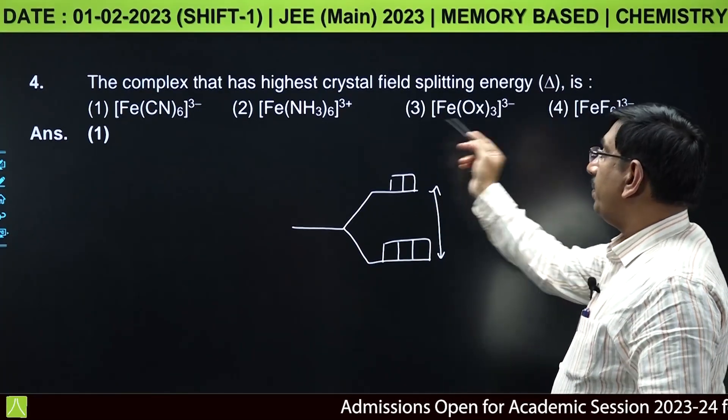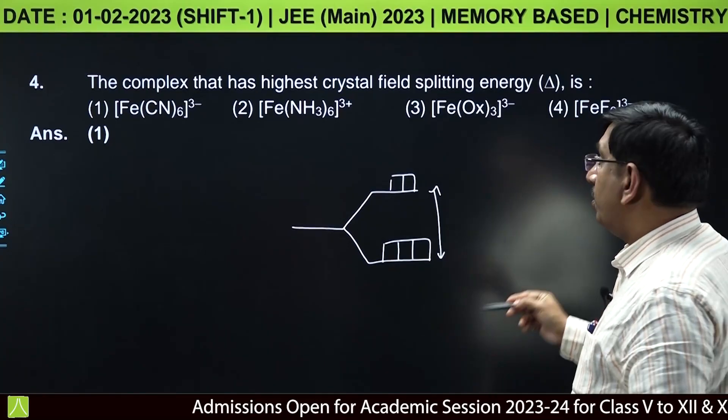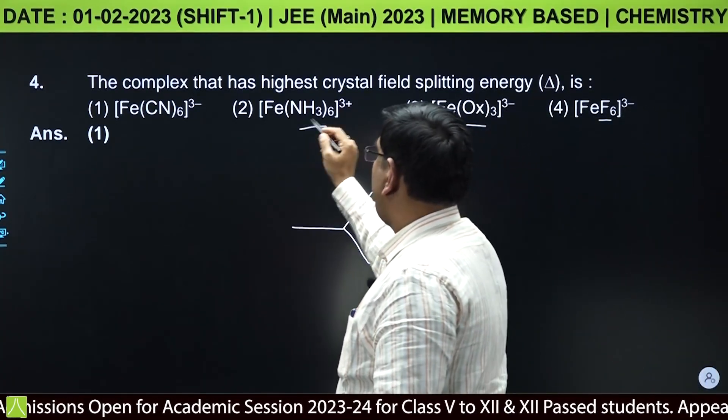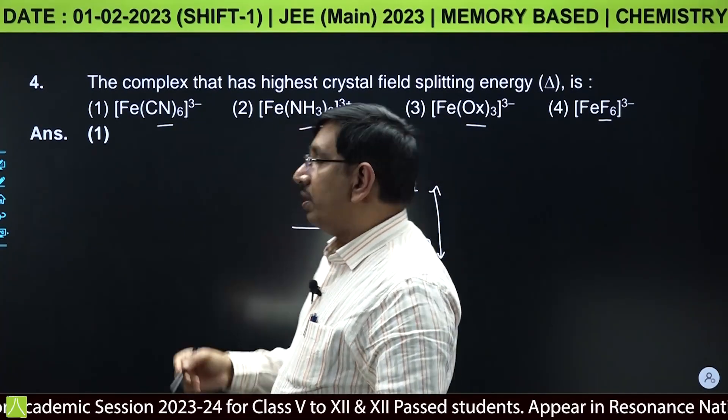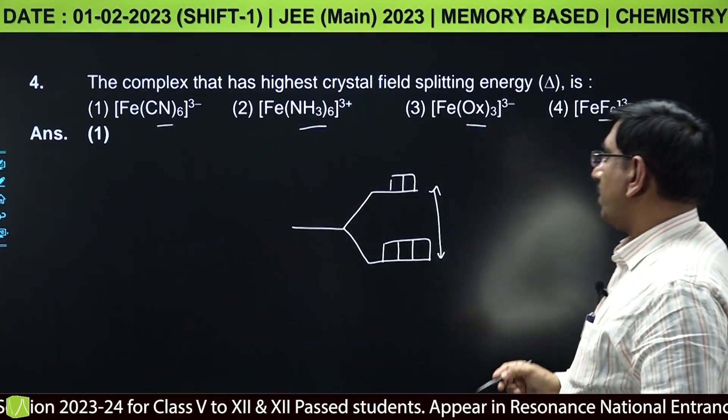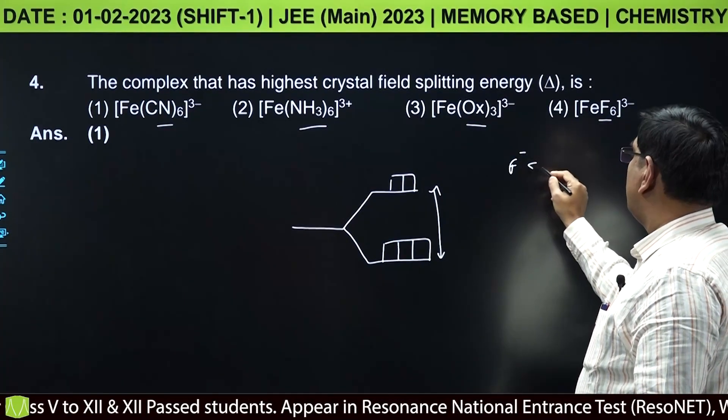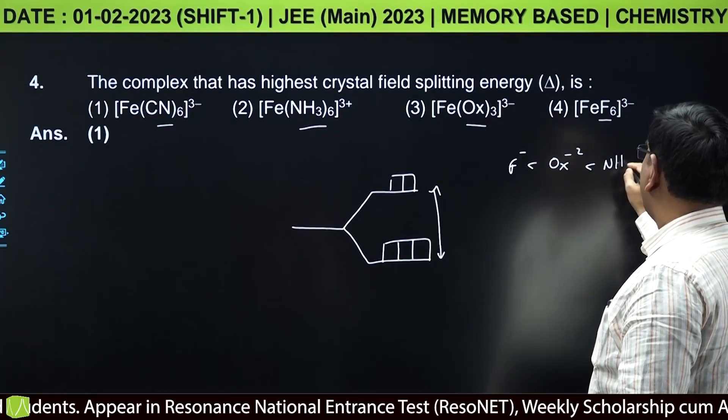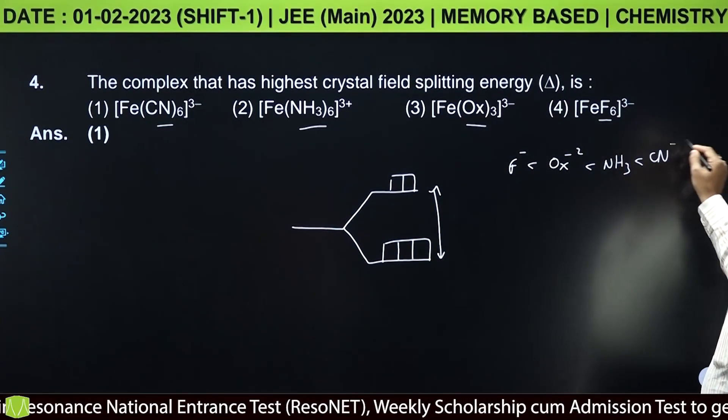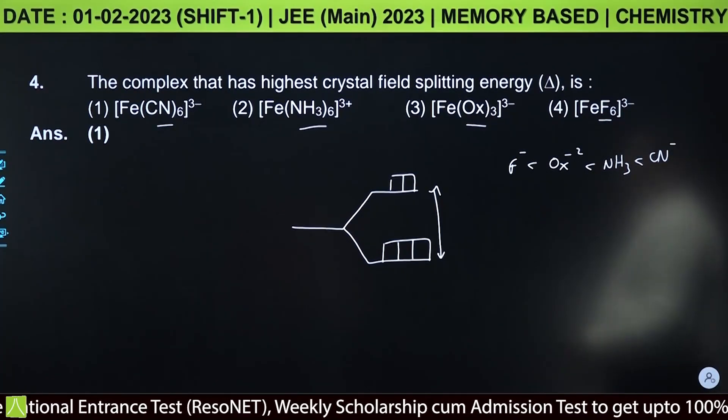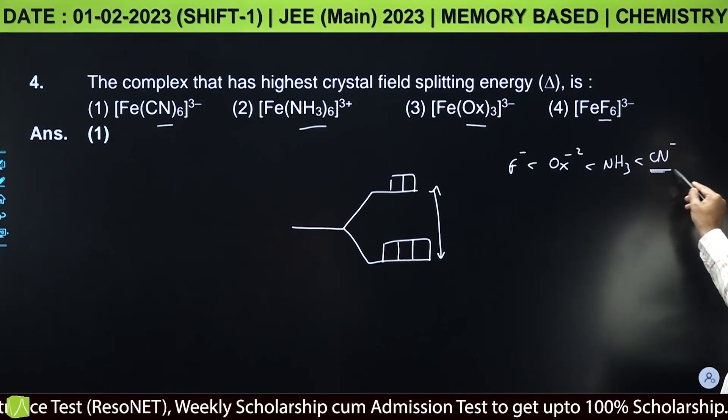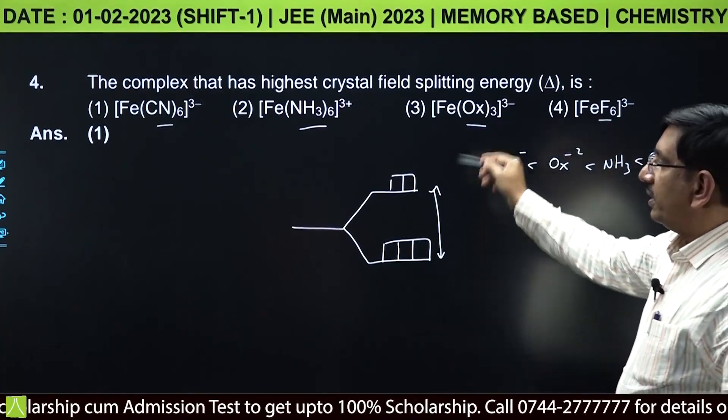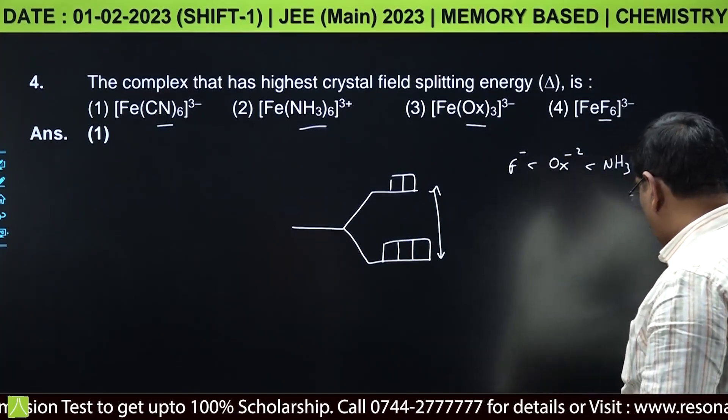In the given iron complexes with F-, oxalate, NH3, and CN- ligands, the order of strength from spectrochemical series: F- < ox2- < NH3 < CN-. The strongest ligand is CN-, so in presence of CN- the splitting will be more.